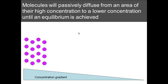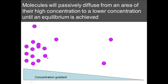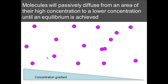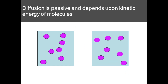To recap: you start from an area of very high concentration and the molecules spread out until you reach an equilibrium — that is effectively what diffusion is. It is passive because it doesn't require any energy. The amount of kinetic energy of the molecules, usually determined by temperature, determines how quickly diffusion happens.